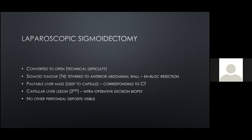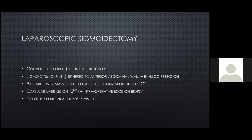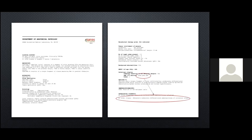A repeat colonoscopy was performed to review the polypectomy site. No visible residual polyp or scar was seen, so it was thought the lesion was completely excised. At the same time, the tumor in the descending or sigmoid colon was tattooed with a view to do a laparoscopic resection. On the day of surgery, the patient was started as a laparoscopic sigmoidectomy but converted to open early due to technical difficulties. A T4 sigmoid tumor was resected — quite tethered to the anterior abdominal wall — and resected en bloc. The liver lesion was palpable deep to the capsule, corresponding to the CT. In addition, a second capsular liver lesion was found intraoperatively, and an excision biopsy was performed. No other peritoneal deposits were found. Histopathology confirmed T4N2M1 diagnosis with the liver lesion showing metastatic adenocarcinoma.